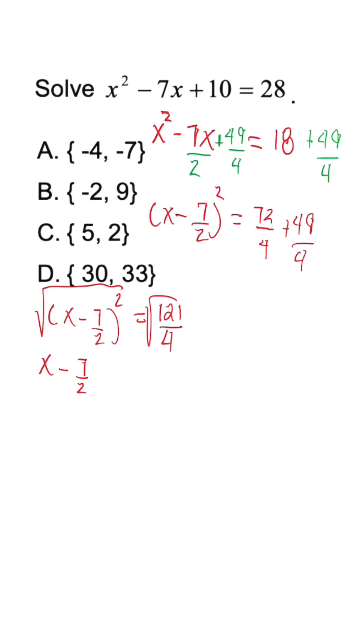We have x minus 7 over 2 is equal to plus or minus 11 over 2. We isolate x, so now we have 7 over 2 plus or minus 11 over 2. Once we break this down, this is what we're going to get.